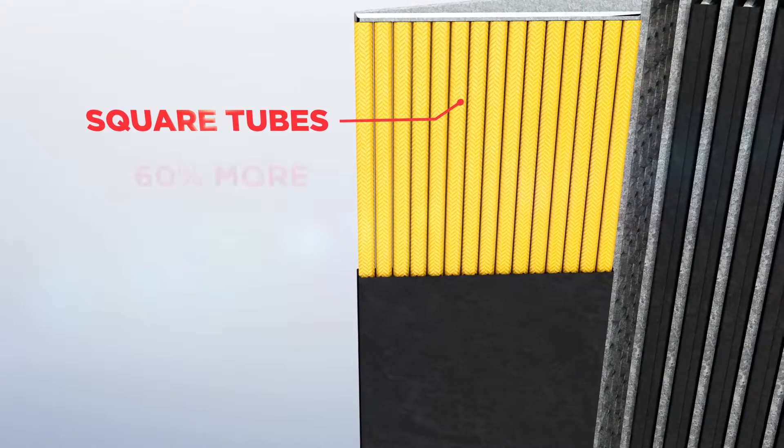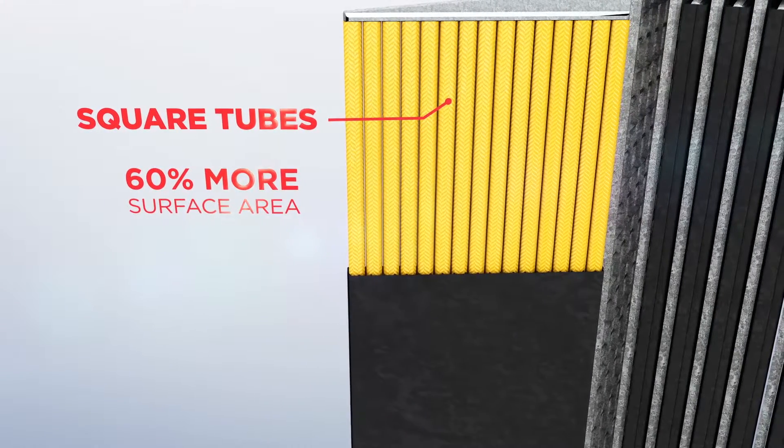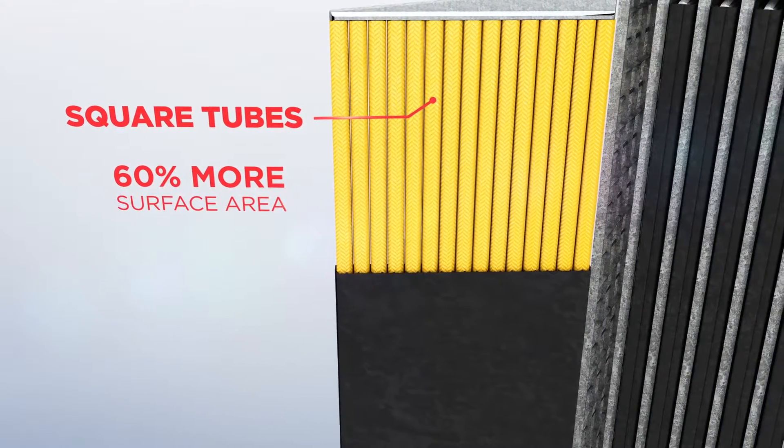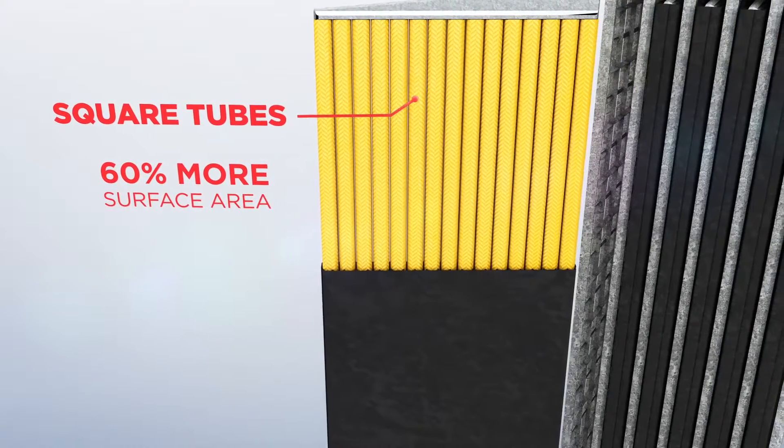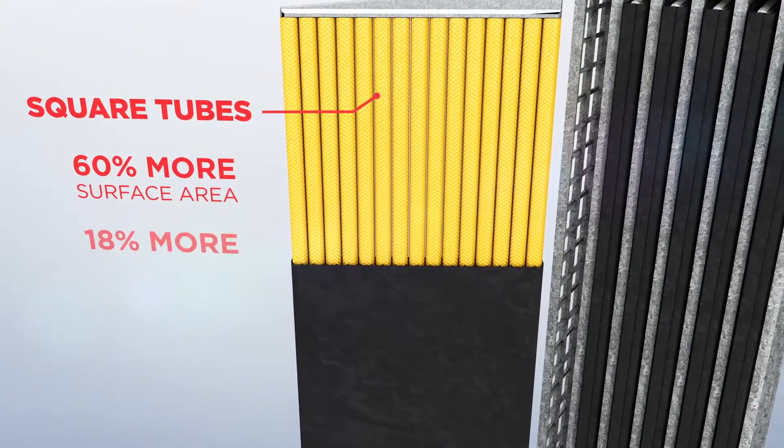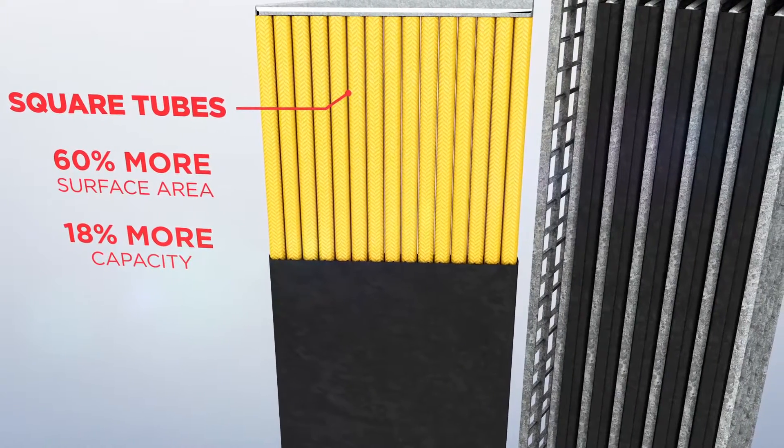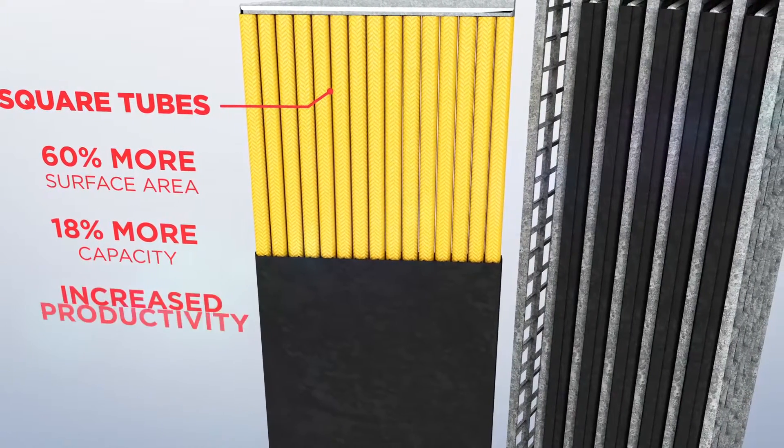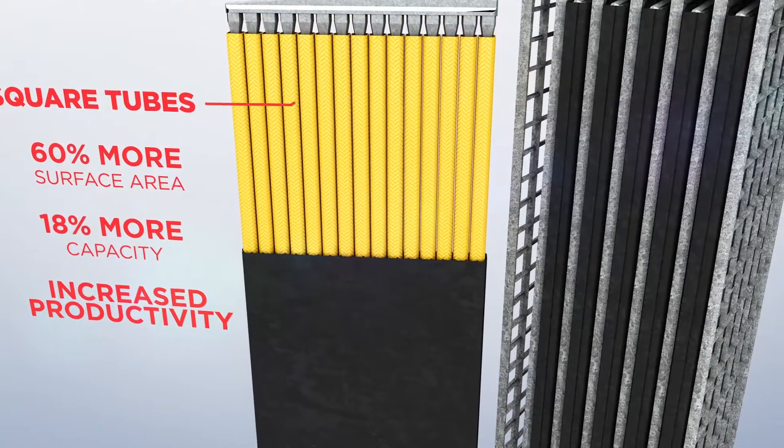Iron-clad square tubes provide up to 60% more surface area on the positive plate for higher sustained voltages and more power. The square tube design's greater surface area also provides up to 18% more capacity than flat plate batteries, allowing for longer run-time and increased productivity.